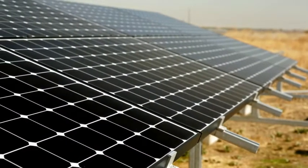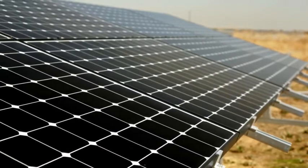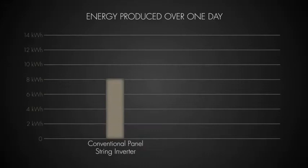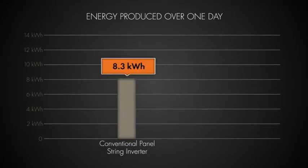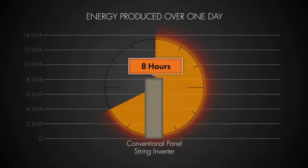Even with no shading present, the four systems tested showed wide variation in the amount of energy generated. The conventional 14.5% panels produced 8.3 kilowatt-hours. That's enough energy to power the average household for about eight hours.